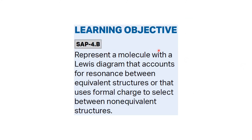The learning objective of this topic was to represent a molecule with a Lewis diagram that accounts for resonance between equivalent structures, or that uses formal charge to select between non-equivalent structures. In this video, we covered the meaning of equivalent and non-equivalent structures, how equivalent structures are represented with resonance, and how formal charge (V − U − S/2) is used to identify the most stable non-equivalent structure.